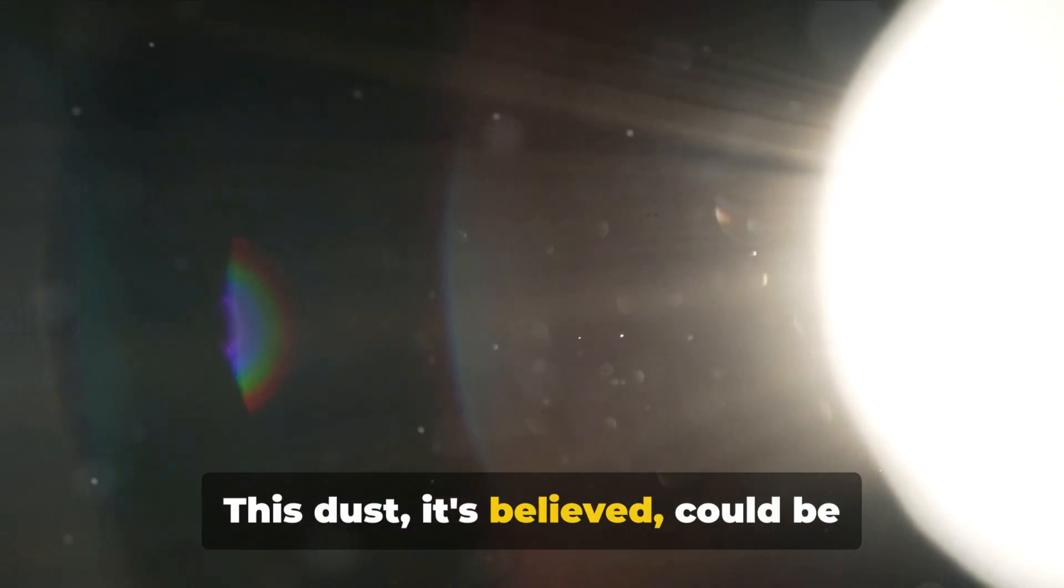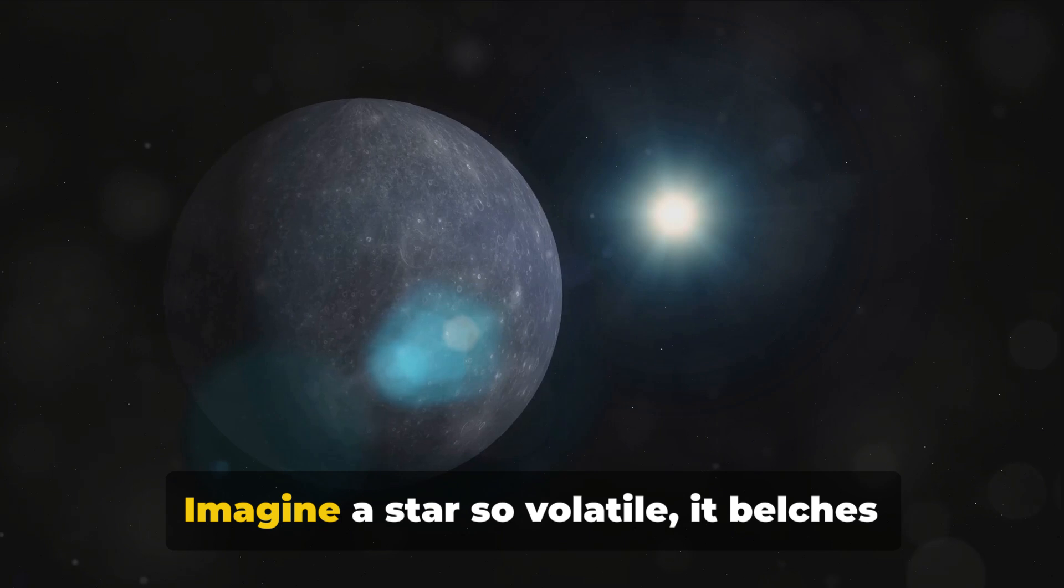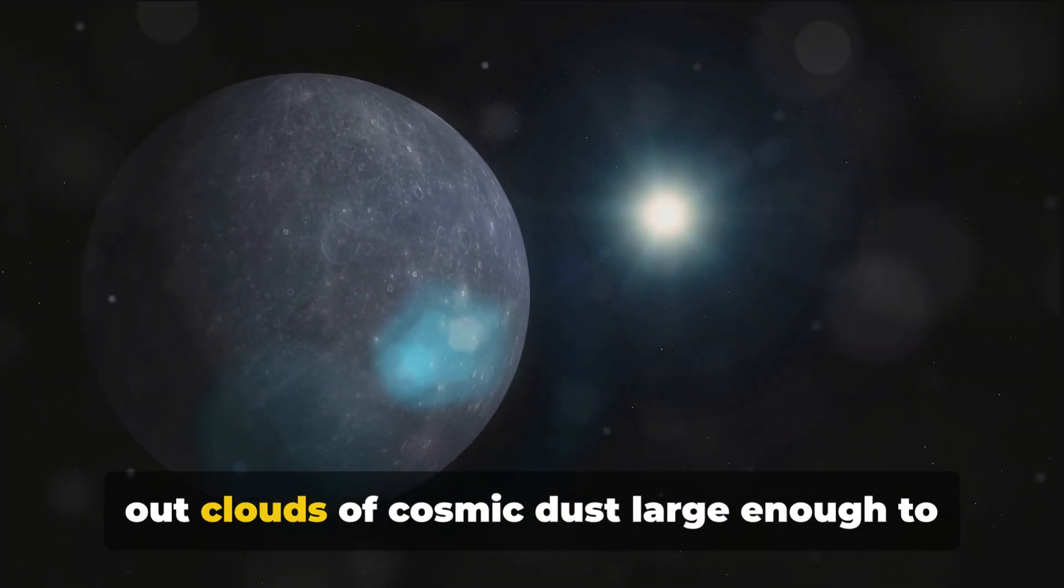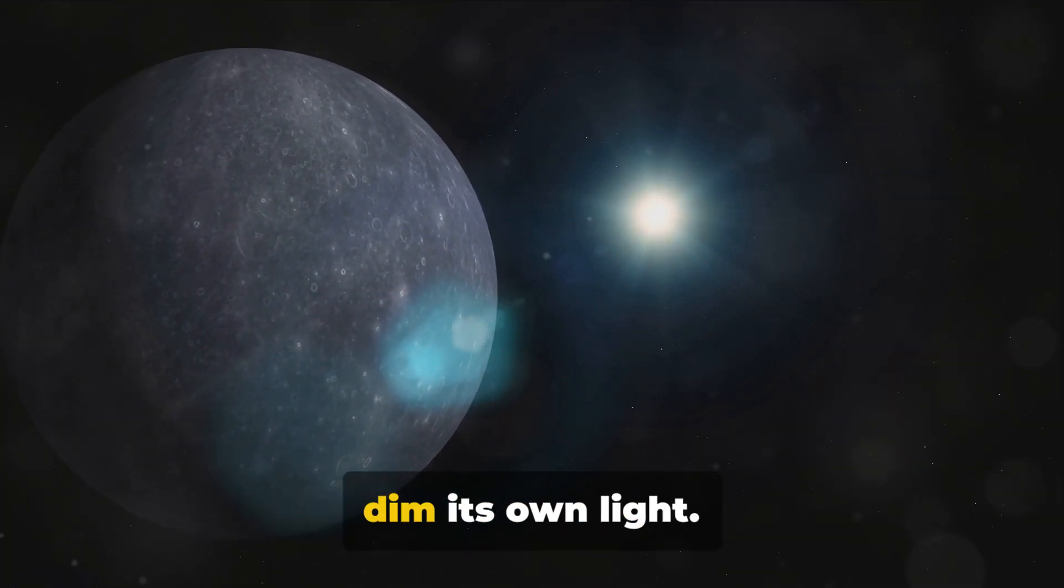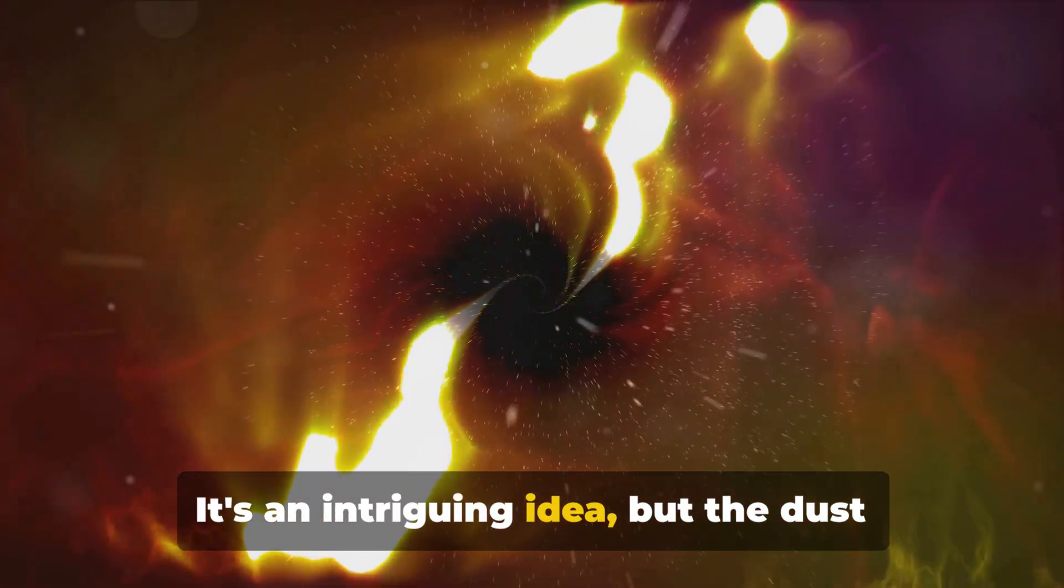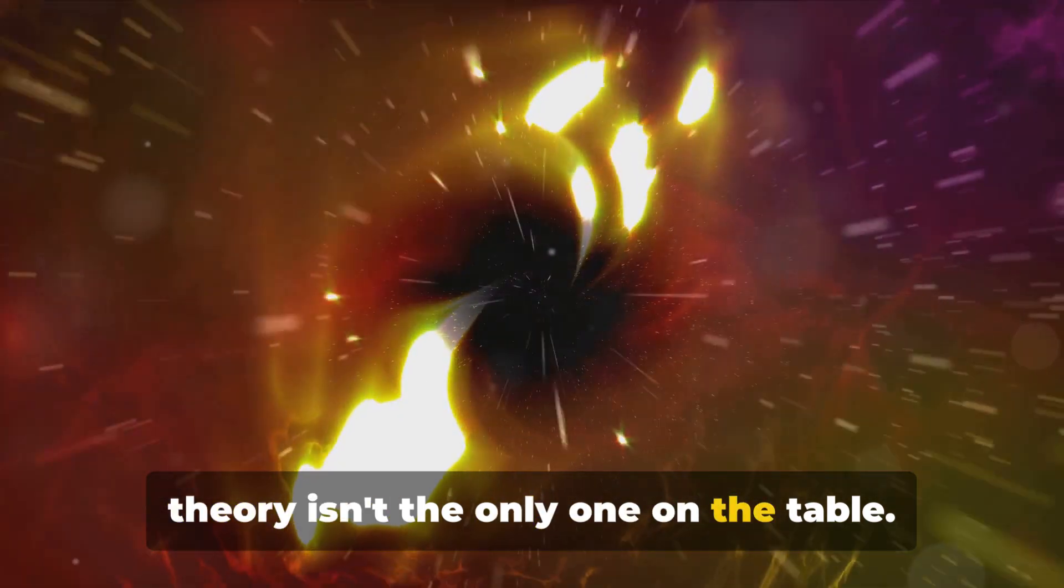One theory suggests that these events might be due to vast clouds of dust obscuring the star's light. This dust, it's believed, could be expelled from Betelgeuse itself. Imagine a star so volatile, it belches out clouds of cosmic dust large enough to dim its own light. It's an intriguing idea, but the dust theory isn't the only one on the table.